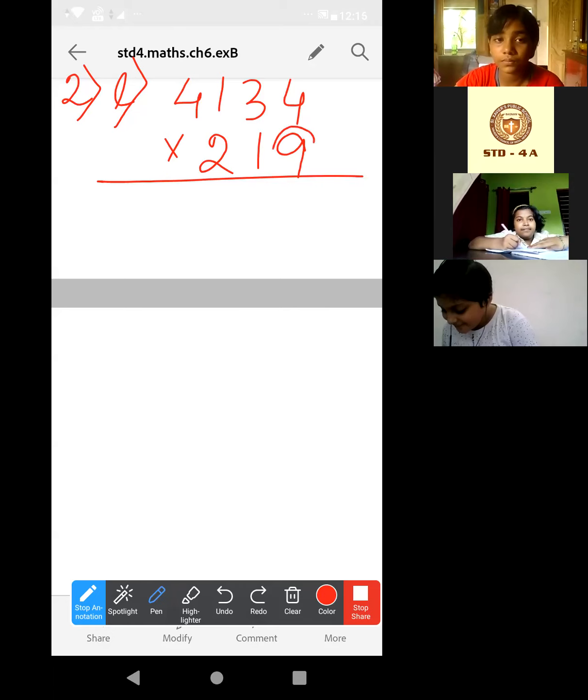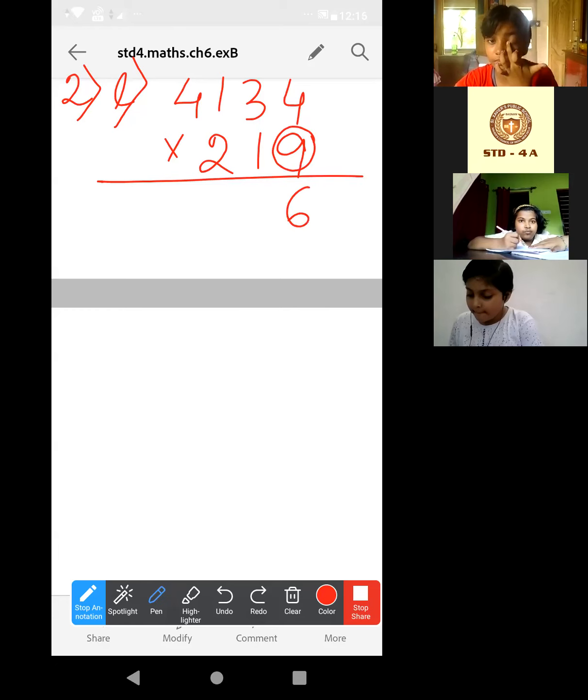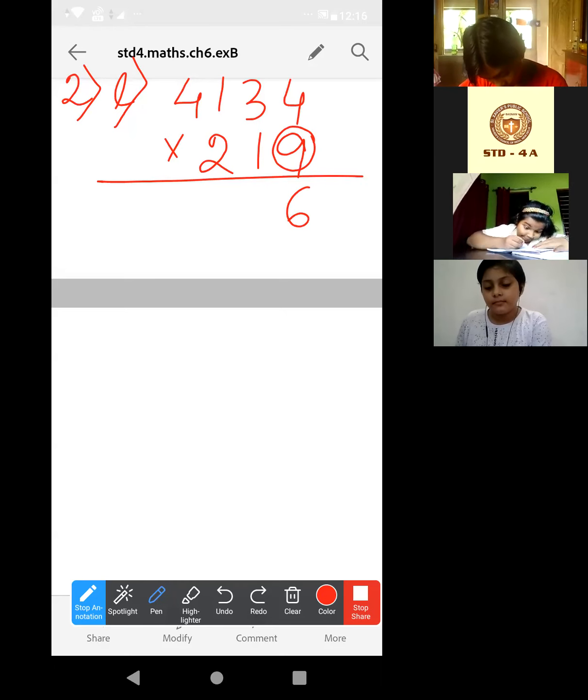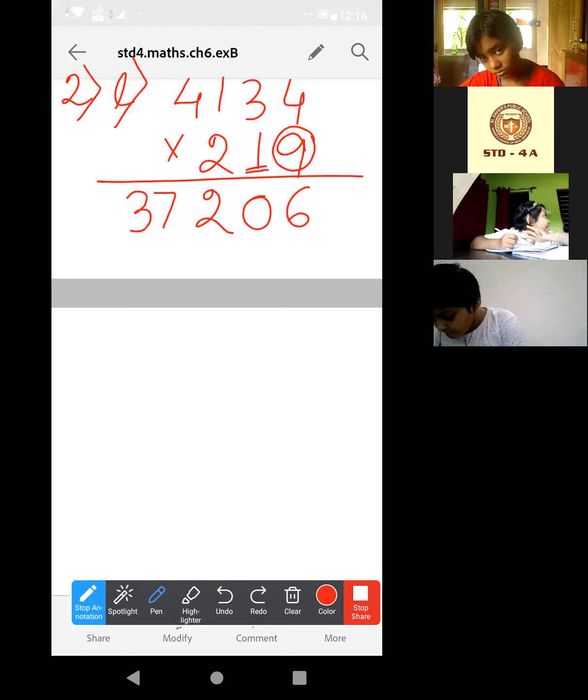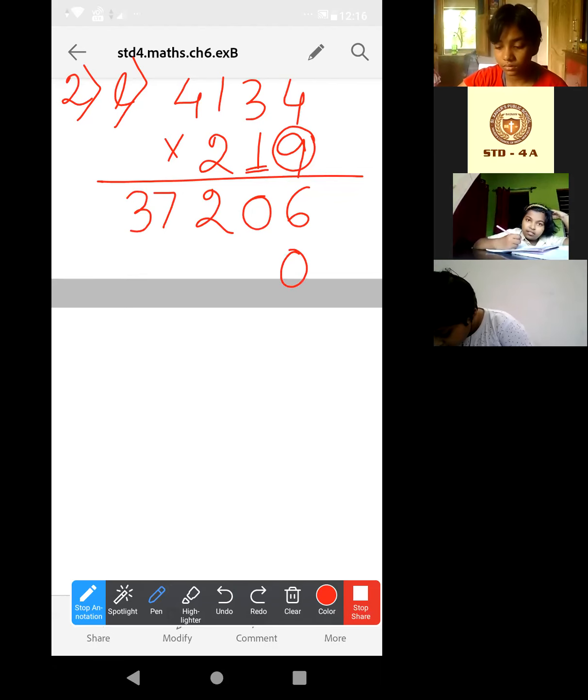By 9 we have to multiply first. 4 times 9 is what? 36. So 6 will be there, 3 carry forward. Just keep it mind, the carry forward digit keep in mind. Now 3 times 9 is 27 plus that 3, 30 will be there, so 0, 3 again carry forward. Now 9 times 1 is 9 plus this carry forward 3 is 12, then 1 carry forward. Then 4 times 9 is 36 plus that 1 is 37. Good. Now by this 1 we have to multiply. By this 1 means it is in tens place, so 1's place will be 0. Now if we multiply by 1, ultimately the same number will come back. Then like blindly you can write 4,134.